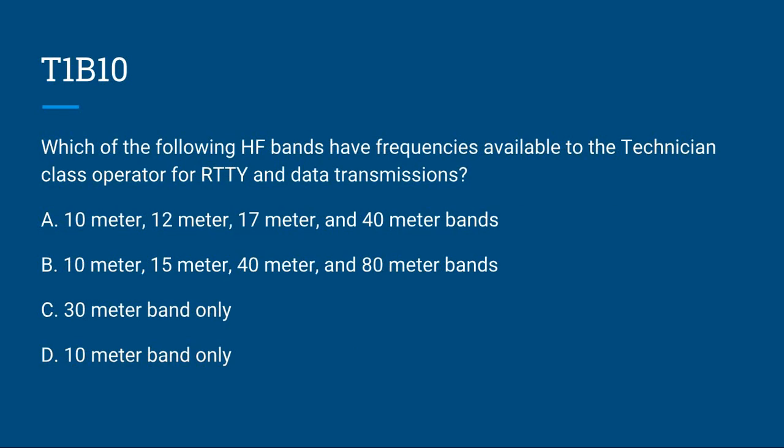T1B10: Which of the following HF bands have frequencies available to the Technician class operator for RTTY and data transmissions? A, 10 m, 12 m, 17 m, and 40 m bands; B, 10 m, 15 m, 40 m, and 80 m bands; C, 30 m band only; or D, 10 m band only. The correct answer is D, 10 m band only.